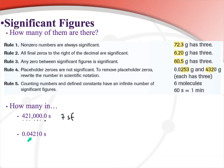For 0.04210: the 4, 2, and 1 count automatically. By rule two, the final zero is to the right of the decimal and ends the number, so it counts. The zero between the decimal and the first non-zero value is not a final zero and doesn't end the number, so it doesn't count — it's just a placeholder. Therefore 0.04210 has four significant figures.